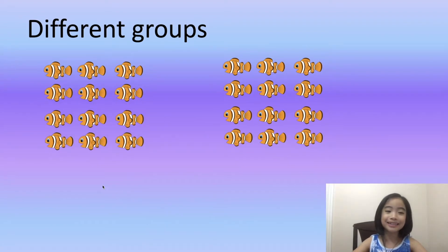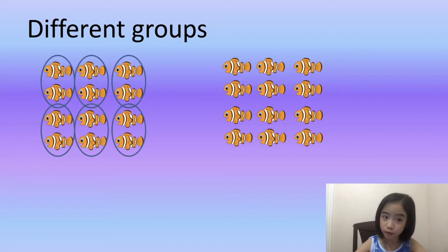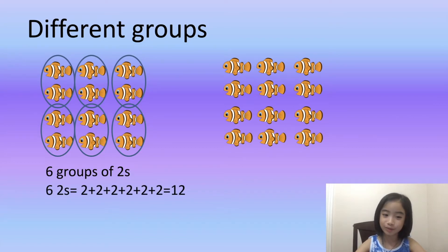And here's another example. I have six groups, each with two fishes. Six groups of twos equals two plus two plus two, six twos, equals twelve. Six times two equals twelve.